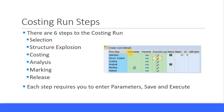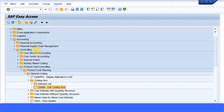There are six steps to the costing run: selection, structure explosion, costing, analysis, marking, and release. As mentioned, marking and release can only be done within the costing run — in the material cost estimate with quantity structure you had to go to a different transaction code for that. In each step you need to specify the parameters, save them, and then execute the transaction. It will show a status with how many materials are costed, any errors, and you can also do a detailed analysis for each step.